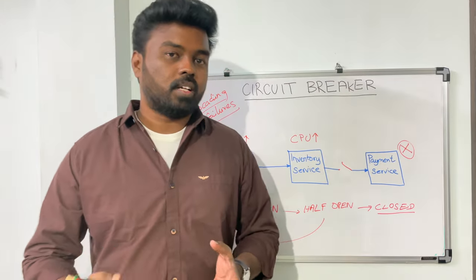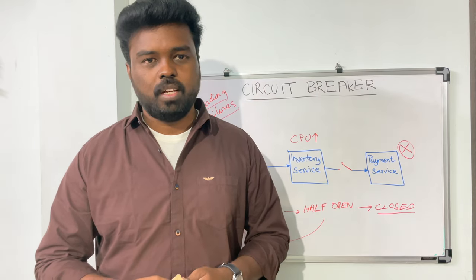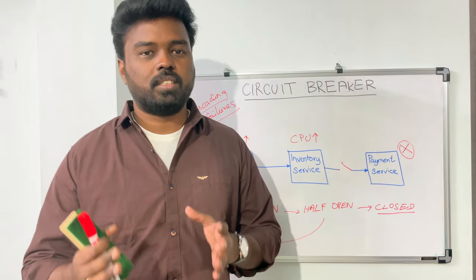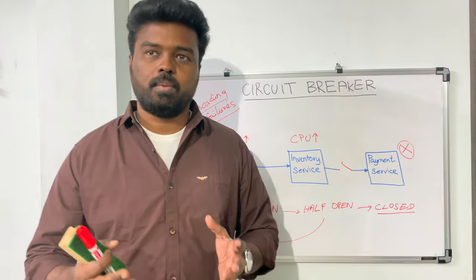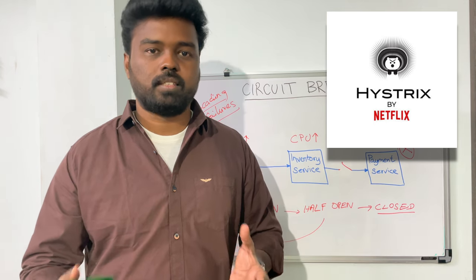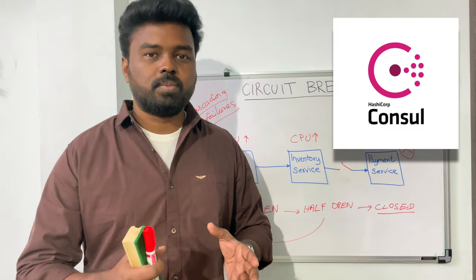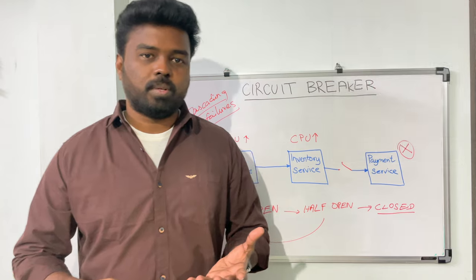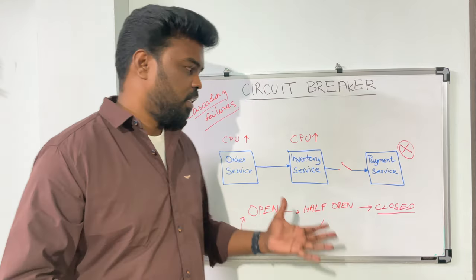People often wonder how to implement this logic in their applications — do we have to implement the circuit breaking mechanism in the application code itself? You don't have to, because there are many libraries available that implement the circuit breaker mechanism. Some common ones are Hystrix, implemented by Netflix and released as open source; Consul, a service mesh product from HashiCorp; and Resilience4j, a Java framework that also has circuit breaking functionality. There are many libraries available that implement this circuit breaking functionality.